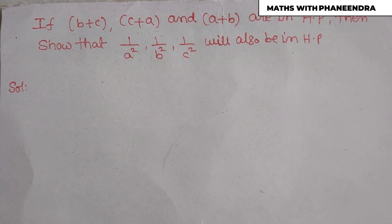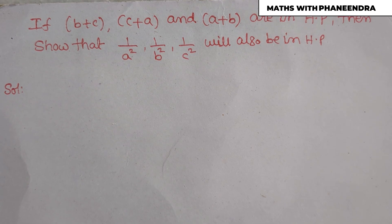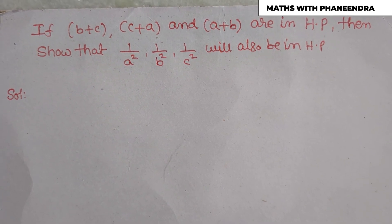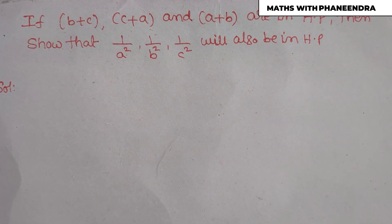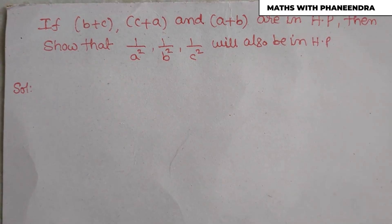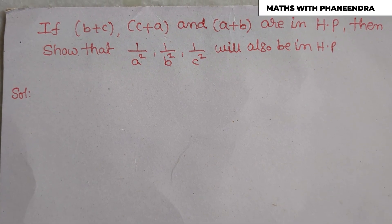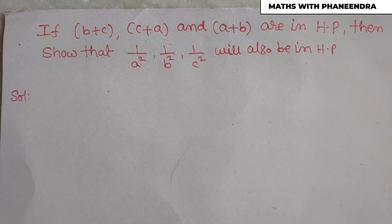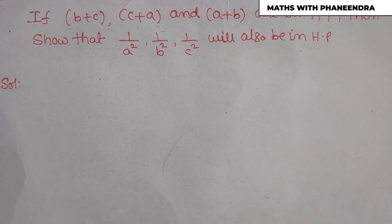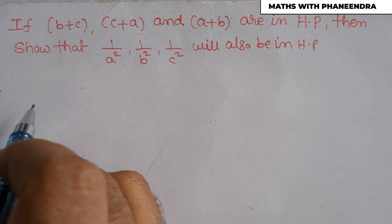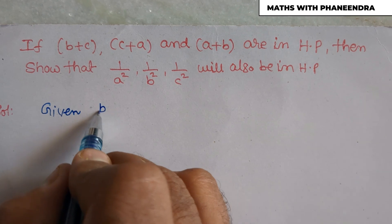Hi dear students, welcome to our channel Maths with Panindra. Let us have a discussion on a question from arithmetic, geometric, and harmonic progression. The question is: if (b+c), (c+a), and (a+b) are in harmonic progression, then show that 1/a², 1/b², 1/c² will also be in harmonic progression. First, the given information: (b+c), (c+a), (a+b) are in harmonic progression.